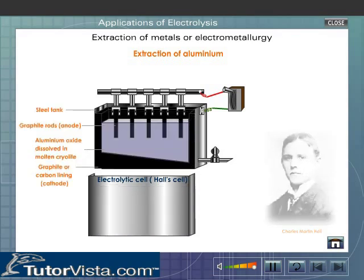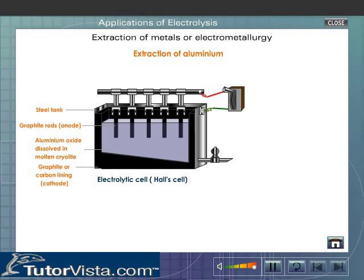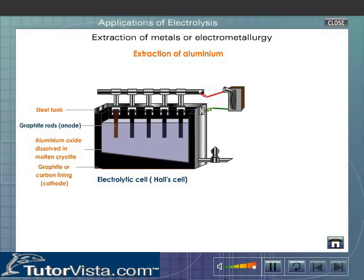Hall's cell consists of a steel tank. The tank is lined with graphite, which acts as the cathode. Rods of graphite are suspended into the molten electrolyte and they act as the anodes. The electrolyte is a mixture of molten cryolite and alumina.